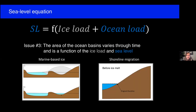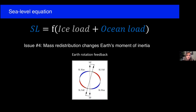Issue three is that the area of the ocean basins varies through time, as a function of both the ice load and the sea level. We therefore include a check for the presence or absence of marine-based ice sheets grounded below sea level — one notable example being the West Antarctic ice sheet. We also have to account for the migration of shorelines. After ice melts, the shoreline migrates to a new position because the volume of water in the ocean basin increased and additional ocean loading led to subsidence of the solid earth. Issue four is that mass redistribution changes earth's moment of inertia, leading to a new rotation axis that also produces a sea level signal.